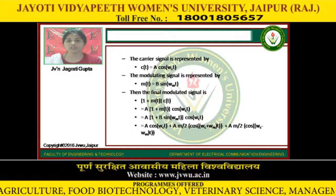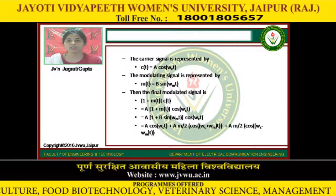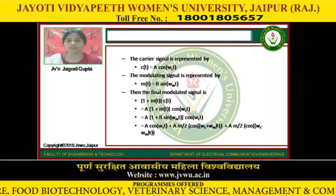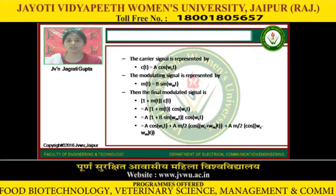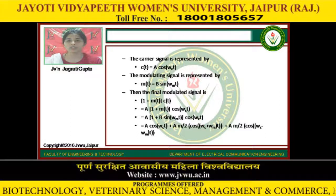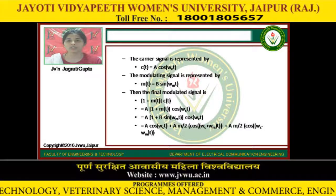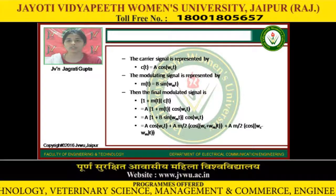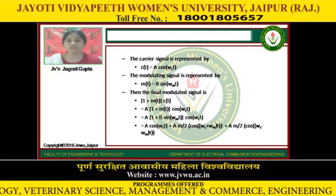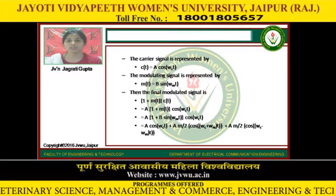The carrier signal is represented by C(t) = A cos(ωc·t). The modulating or message signal is represented by M(t) = B sin(ωm·t). The final modulated signal is given by C(t) multiplied by (1 + M(t)), which on modification gives A·(1 + M(t))·cos(ωc·t). Substituting M(t) = B sin(ωm·t), the equation becomes A·[1 + B sin(ωm·t)]·cos(ωc·t).